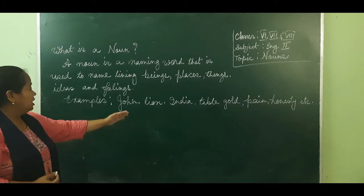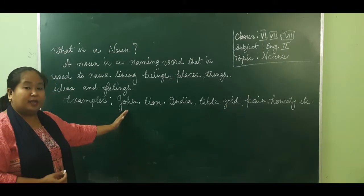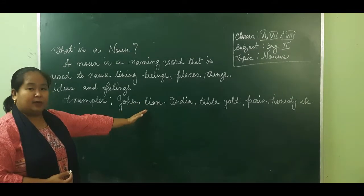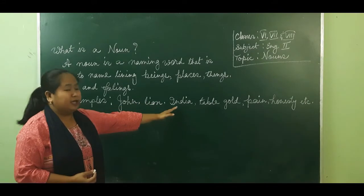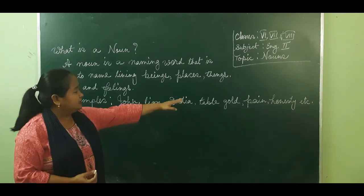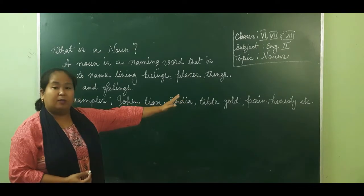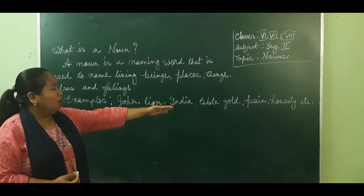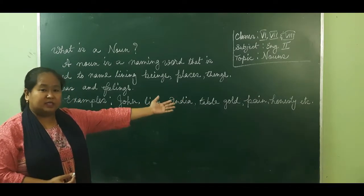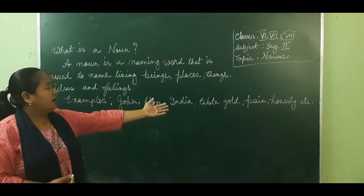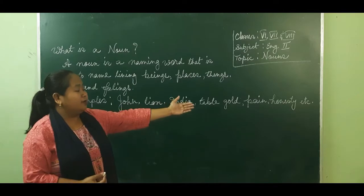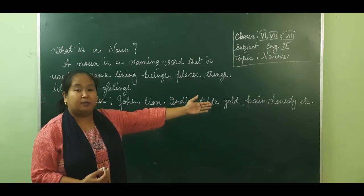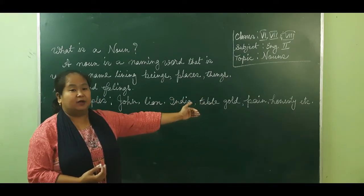Examples: John — name of a person. Lion — name of an animal. India — name of a place. Table — name of a thing. Gold — name of a material. Pain — name of a feeling. Honesty — name of a quality.